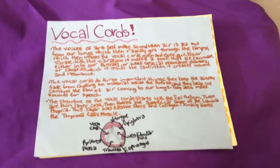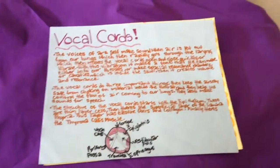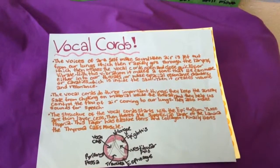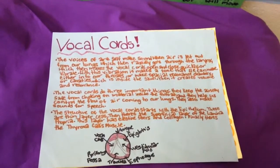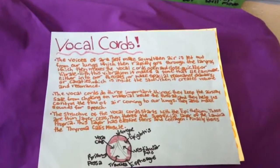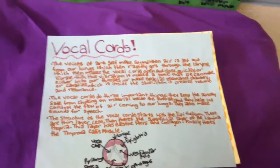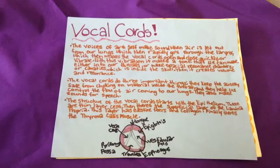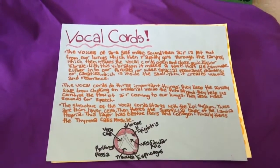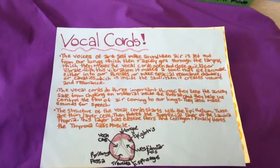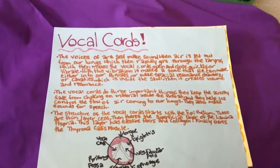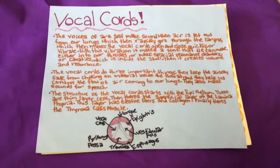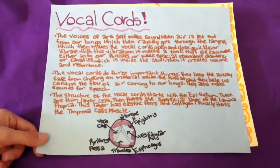The structure of the vocal cords starts with the epithelium — these are thin layer cells. Then there's the superficial layer of the lamina propria. This layer has elastin fibers and collagen. Finally, there's the thyroarytenoid muscle, and this is the vocal cords.